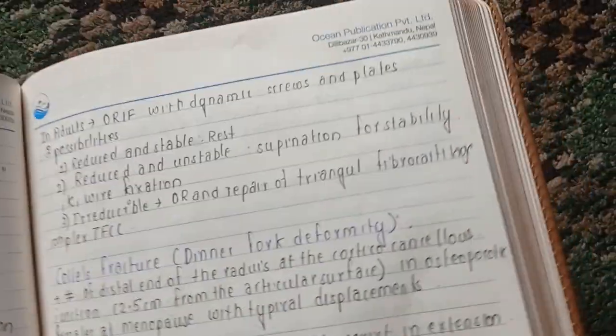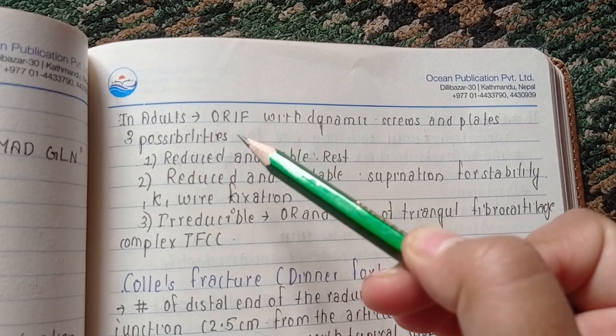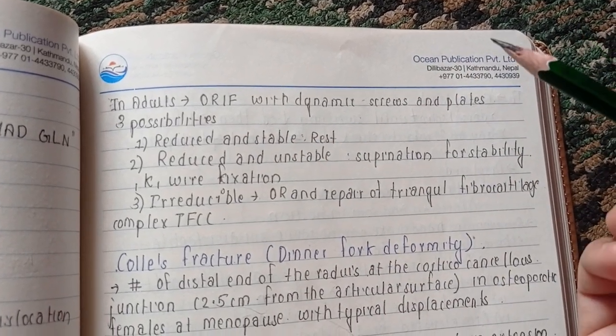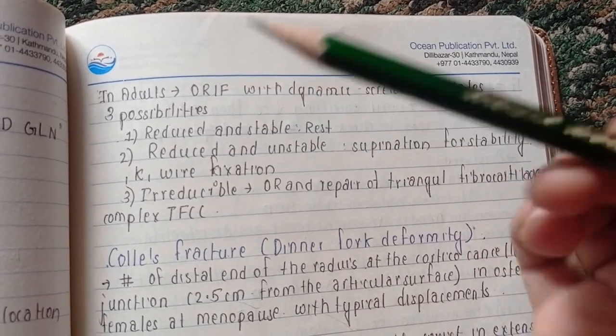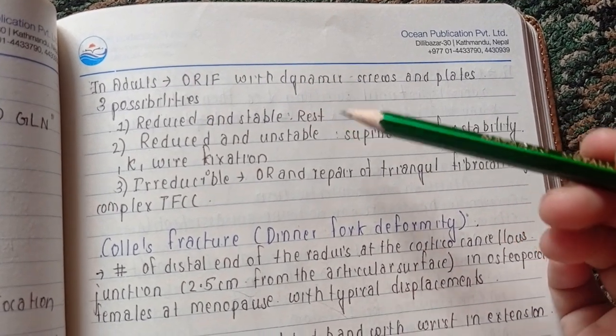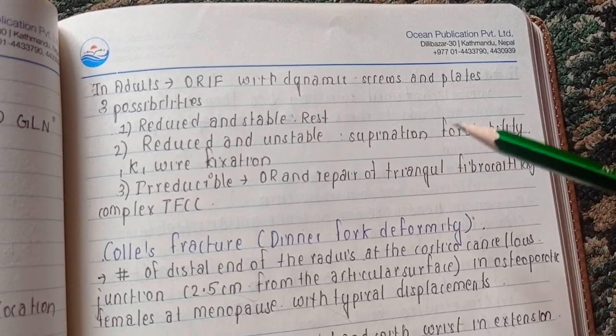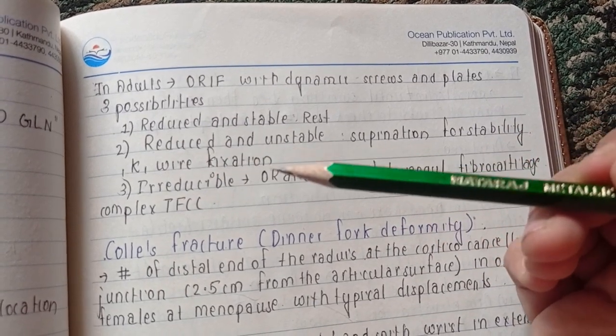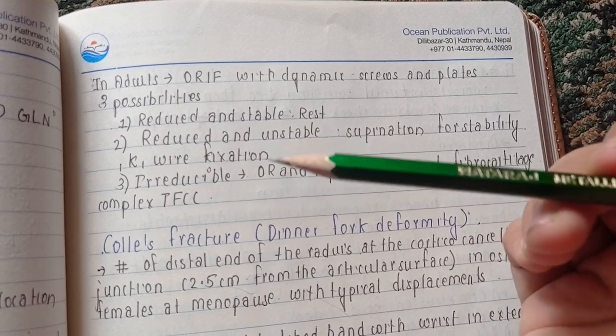In case of adults, we should do open reduction and internal fixation with the help of dynamic screws and plates. So there are three possibilities after this ORIF: If the fracture is reduced and stable, then only rest is enough. If the fracture is reduced and unstable, then supination must be continued for stability while K-wire fixation can be used. Similarly, if the fracture is irreducible, then open reduction and repair of the triangular fibrocartilage complex is necessary.